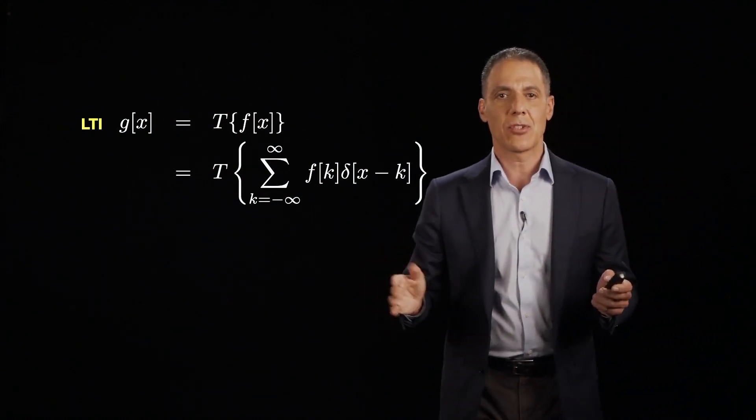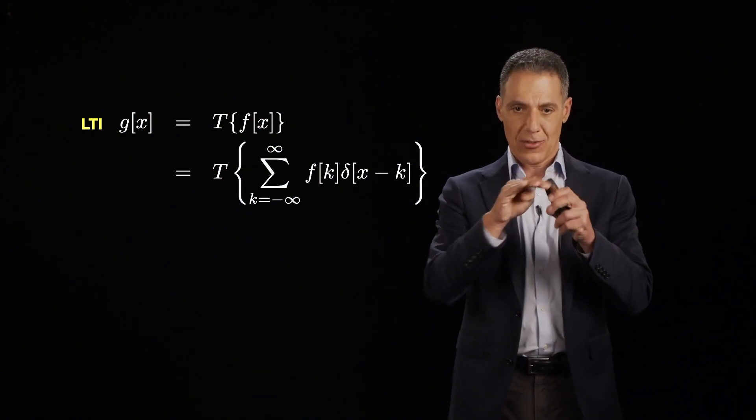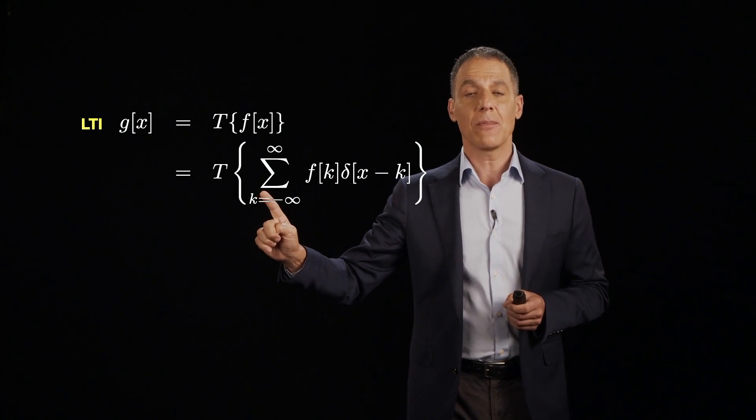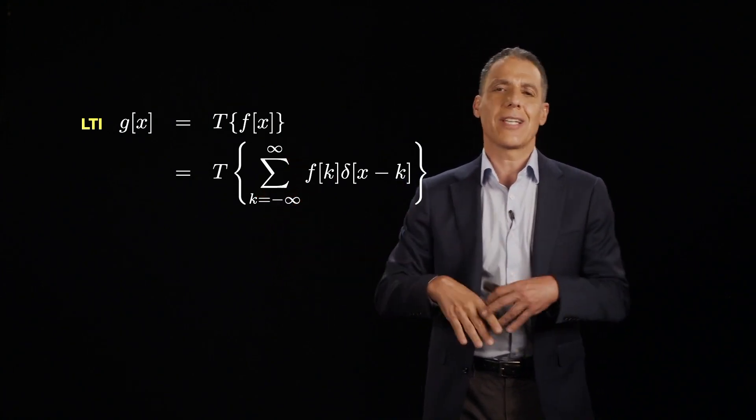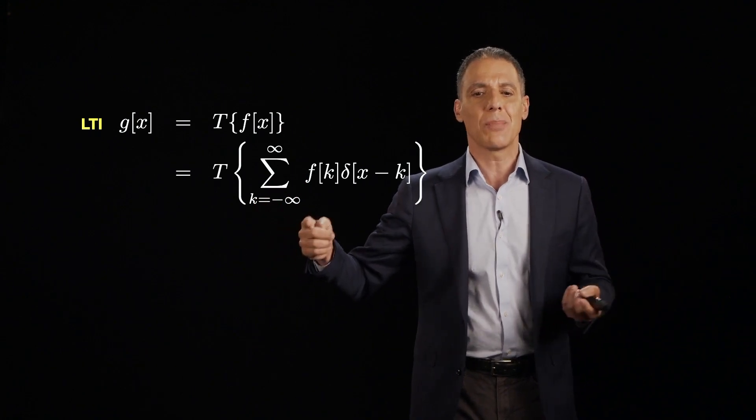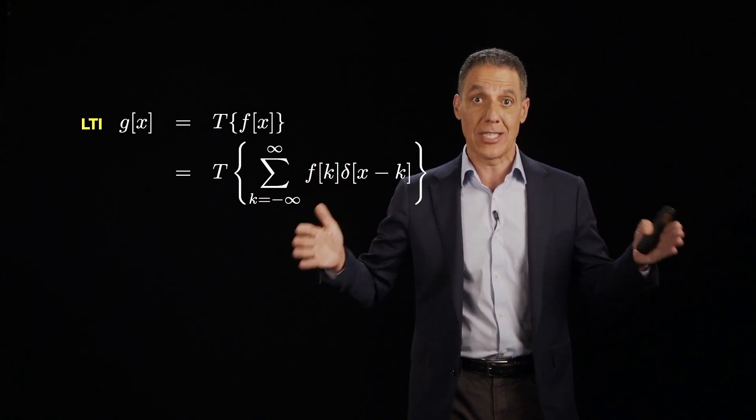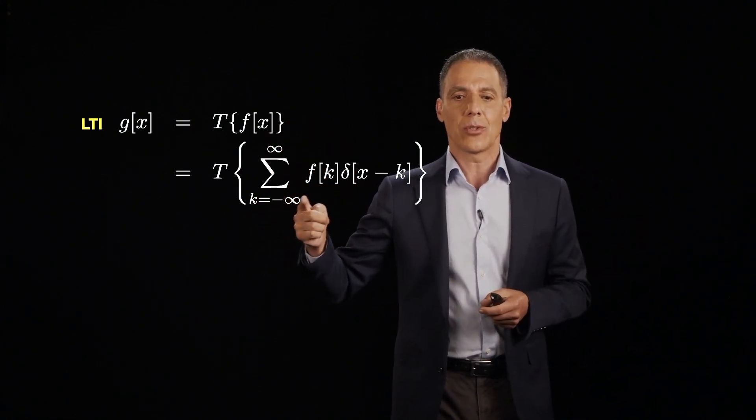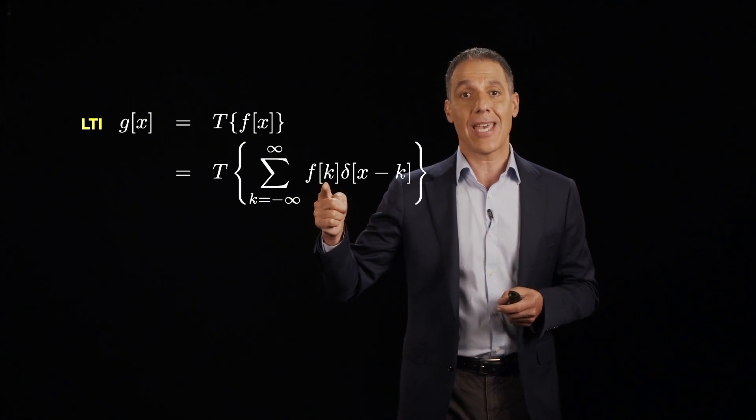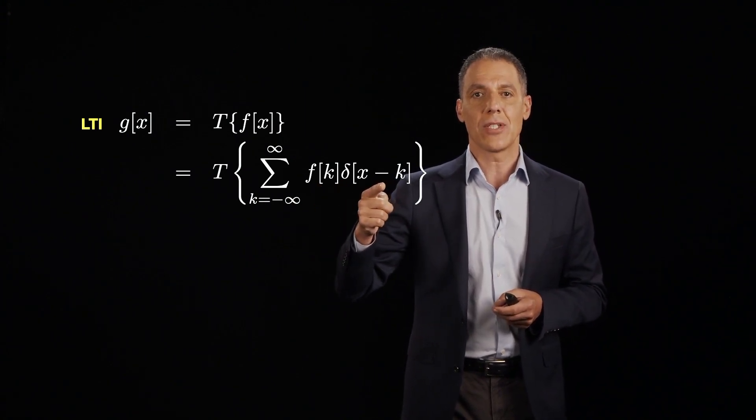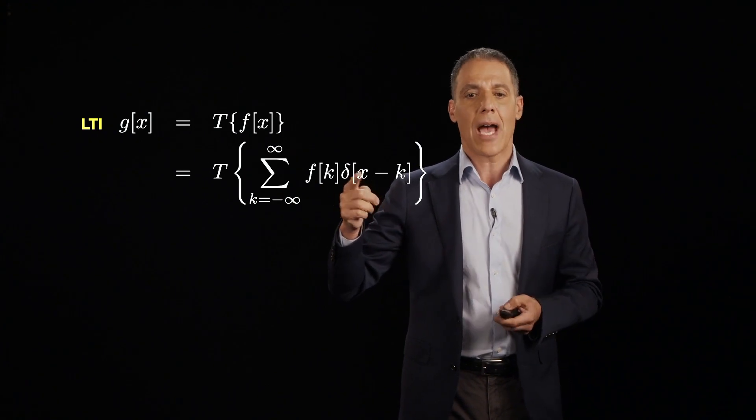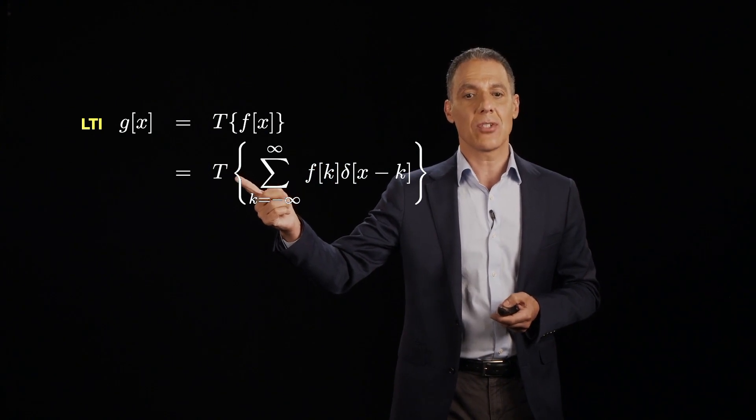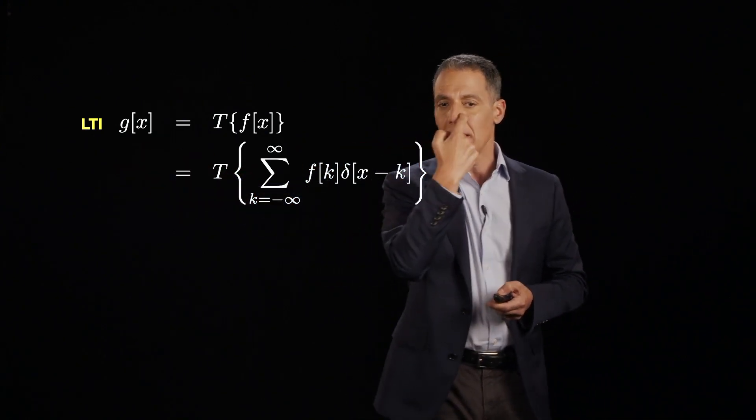The unit impulse is a discrete time signal that has one at the origin and zero everywhere else. So again, f[x] is equal to a sum. And by the way, I've made the bounds here minus infinity to infinity because I just don't know the bounds in my signal. But typically, we are talking about discrete signals in space and time also. But I've just made the bounds infinite, so I don't have to worry about how long the signal is. So it's a scaled version of f[x], f[k], the k-th value of the signal. And then there is my shifted impulse. Now I'm going to take this whole thing and I'm going to shove it into T, the discrete time system, and out comes g[x].